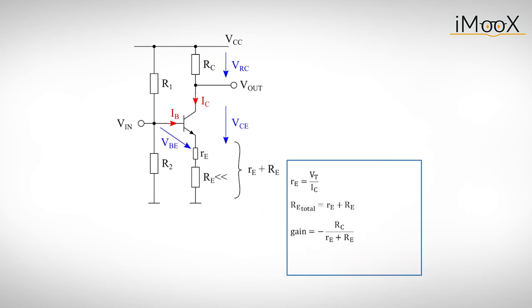This intrinsic resistance must be added to the external emitter resistor and is only significant if the external emitter resistor is very small.